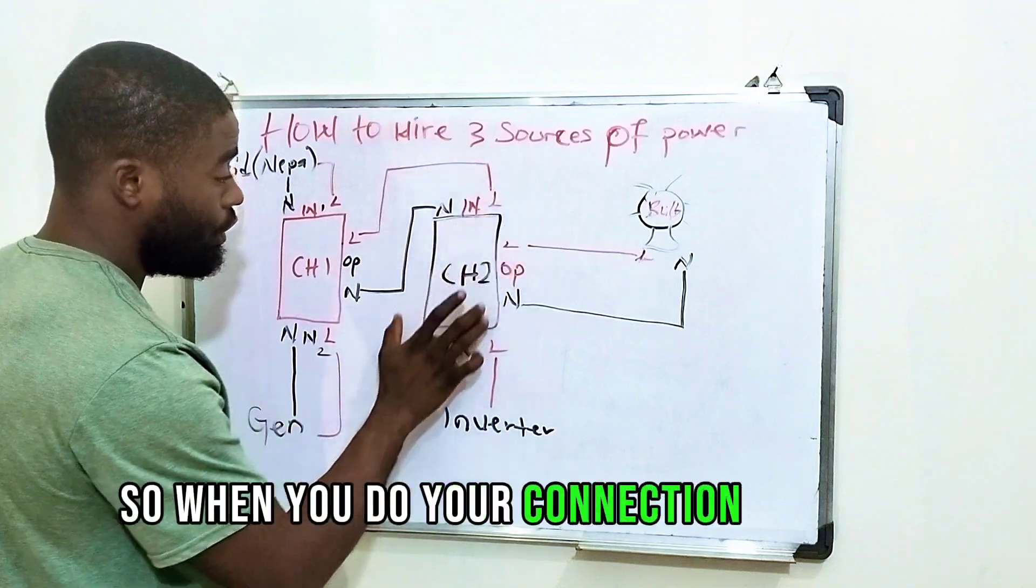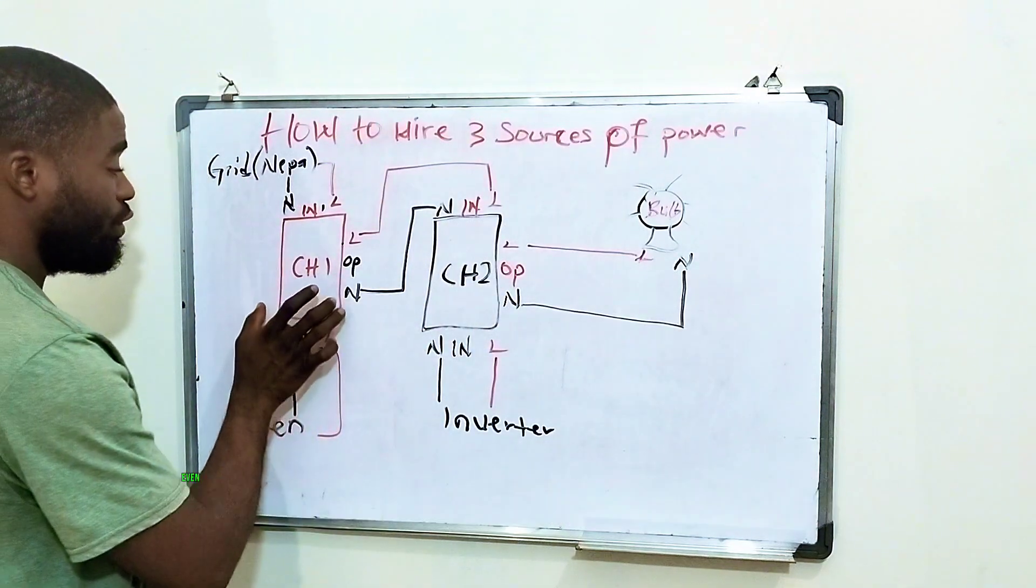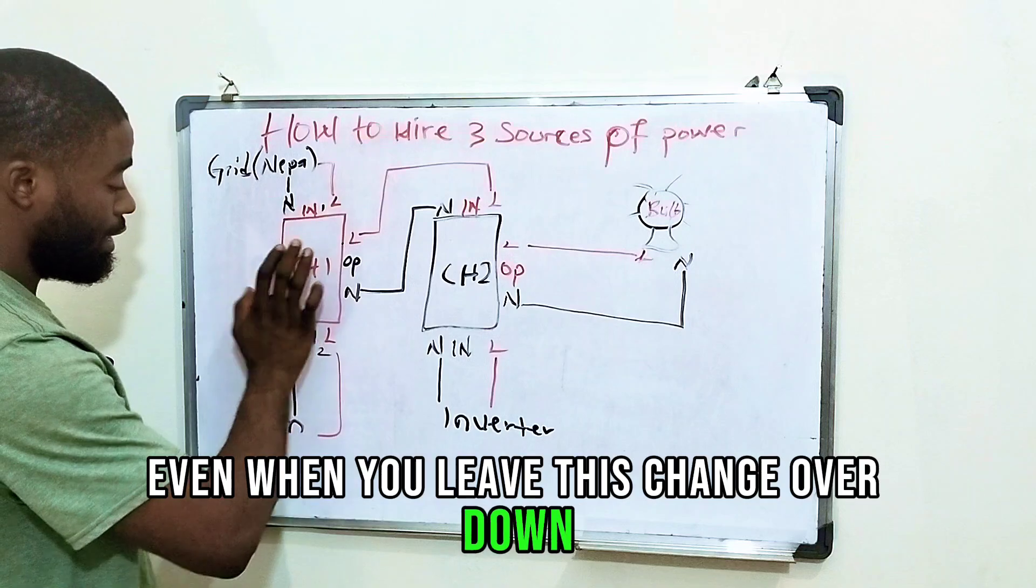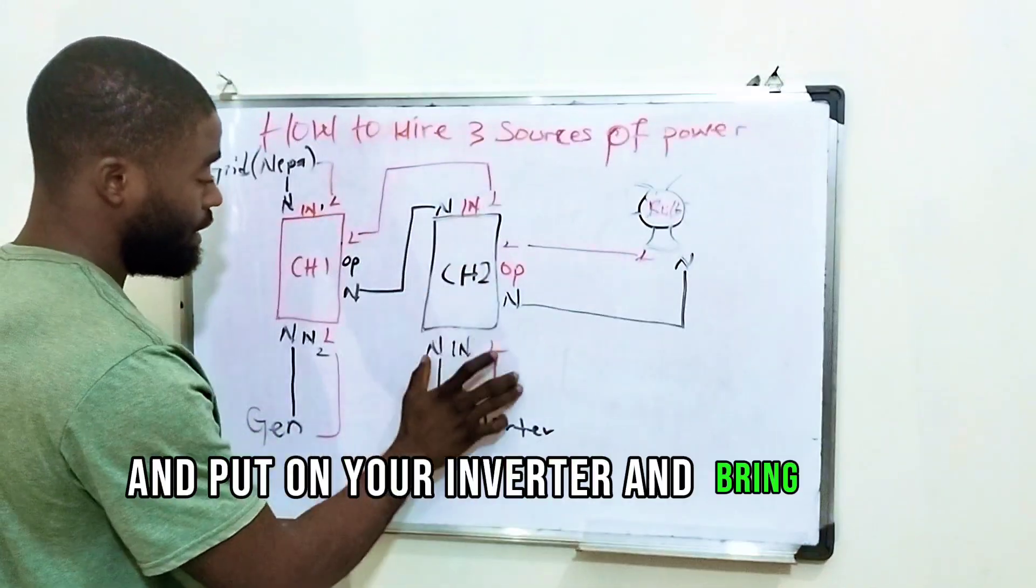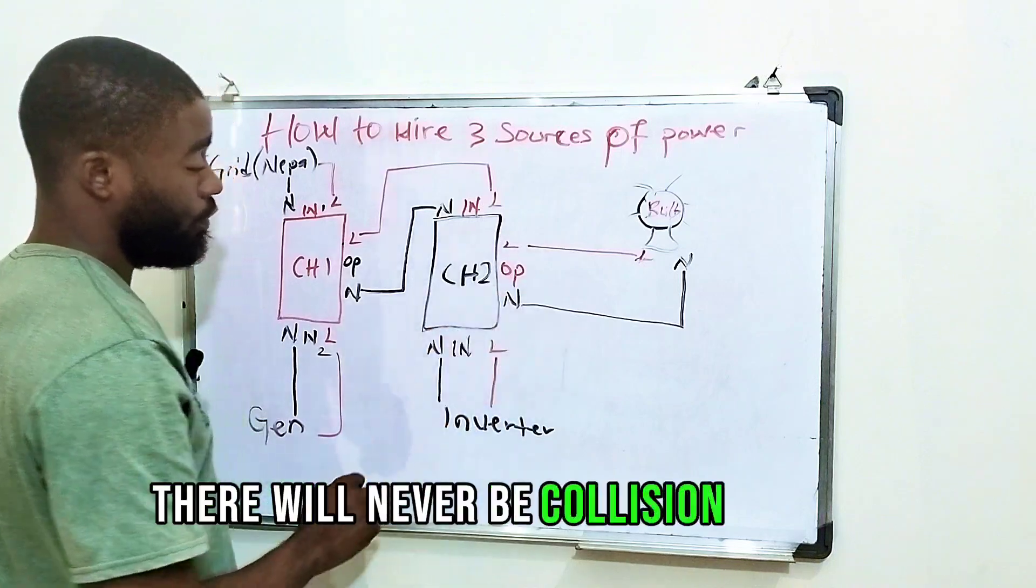So when you do your connection this way, there will never be collision of light. Even when you leave this changeover down, that means you leave the handle on gen or leave it on NEPA light and put on your inverter and bring this one down, there will never be collision of light.